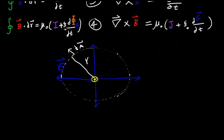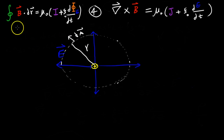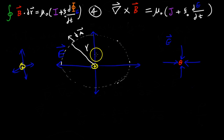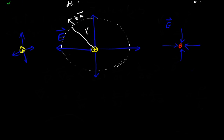If you have a positive charge, it's going to have an electric field. If you bring a negative charge near it, what's going to happen is these guys are going to attract each other. Negative charges are going to have electric fields that are going inwards, and if you bring them together they're going to accelerate towards each other. If you bring a positive charge near another positive charge, they're going to repel each other and accelerate away.